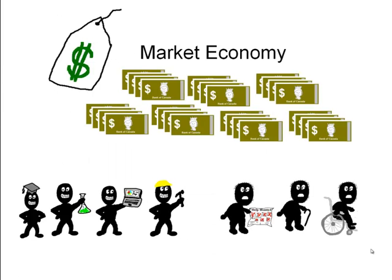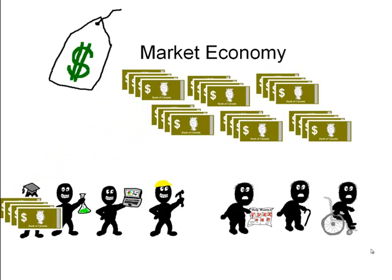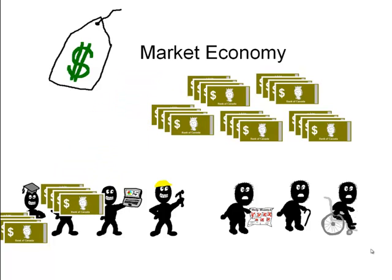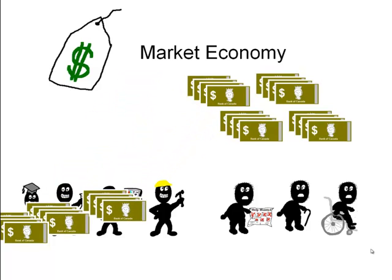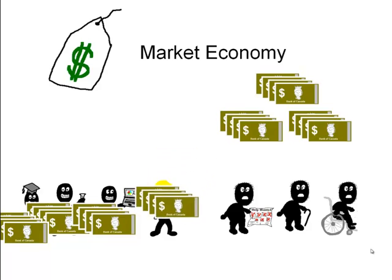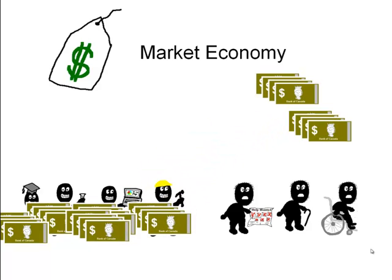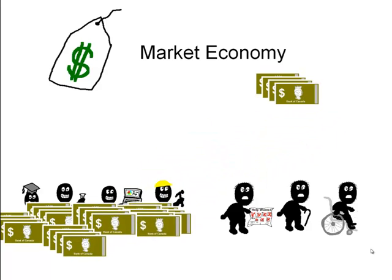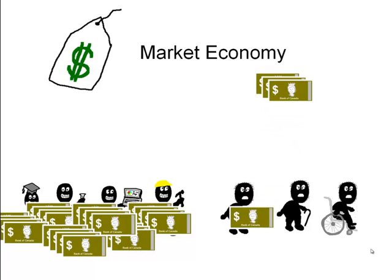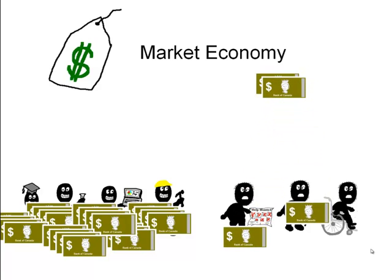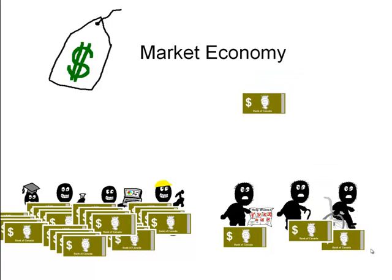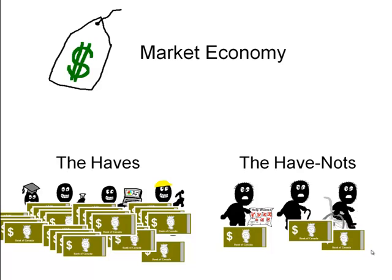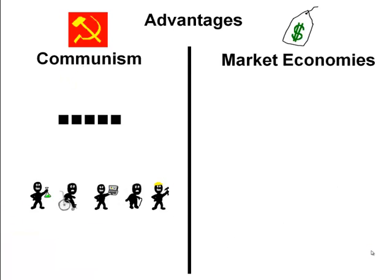How is output in a market economy allocated within society? Those who produce, those who add value, those who have skills that are in short supply, get the benefits of what the market economy has produced. Those who are unable to work or lack education don't benefit as much under a market economy. This produces the haves and the have-nots.